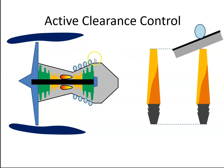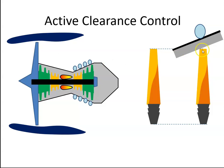The control for all of this takes place inside the FADEC — Full Authority Digital Engine Control. The FADEC controls how much bleed air is bled to the turbine casing section, and that controls the tip clearance between the blade and the case, therefore increasing efficiency.